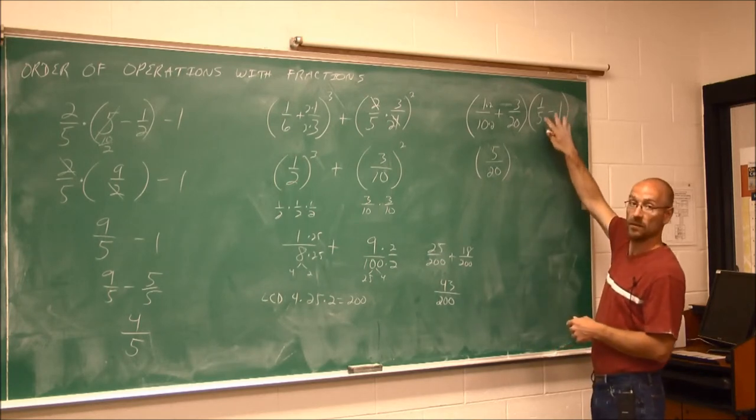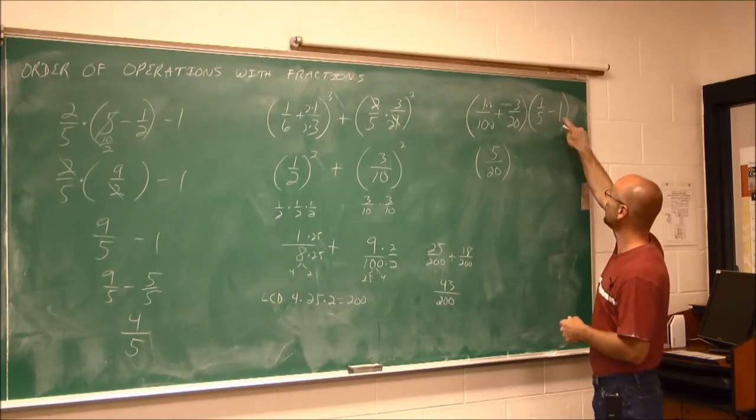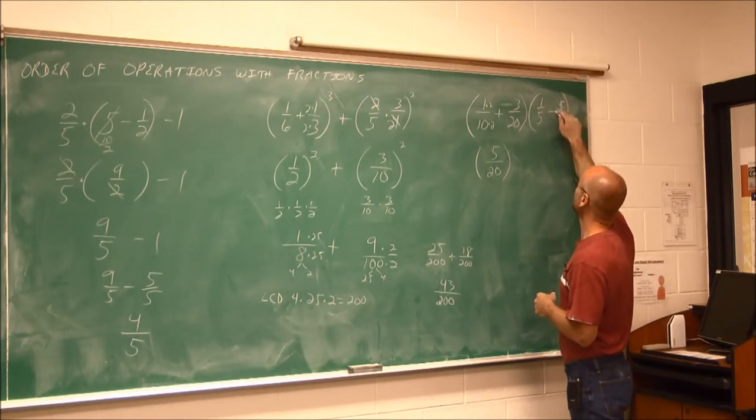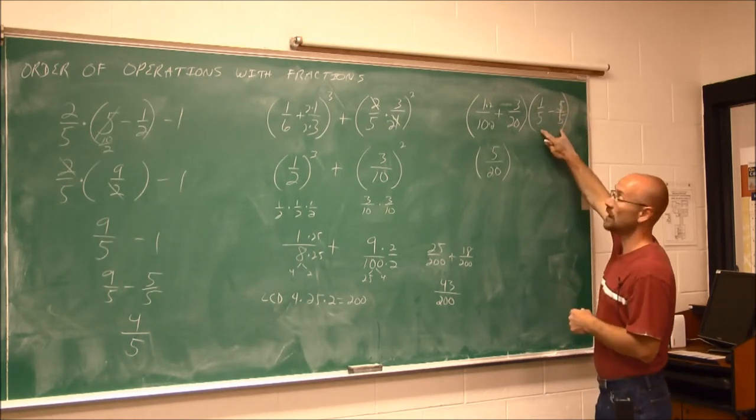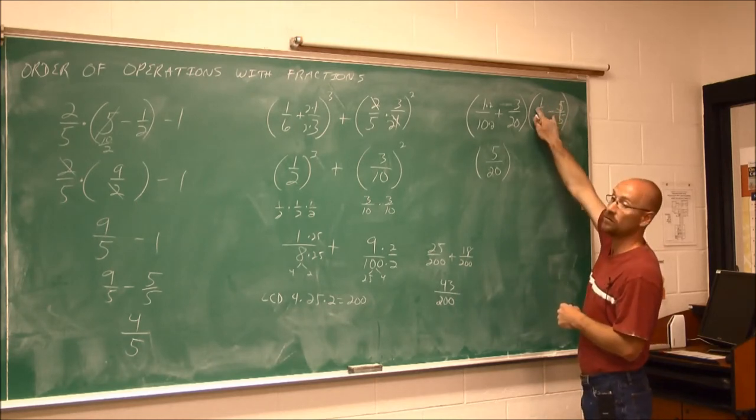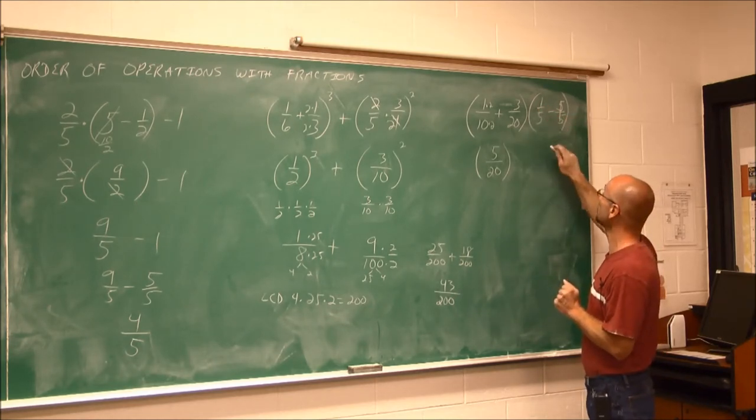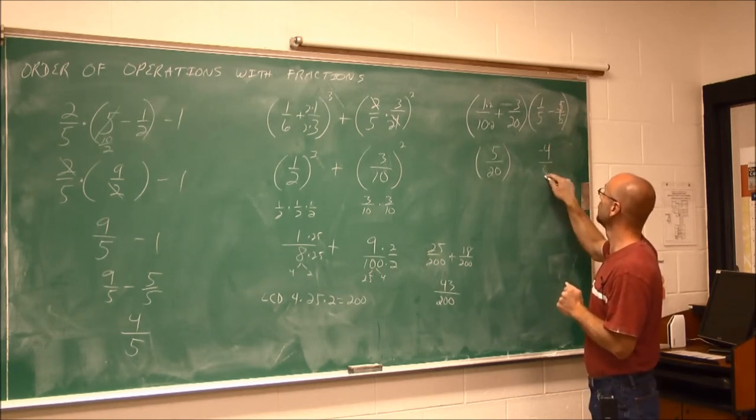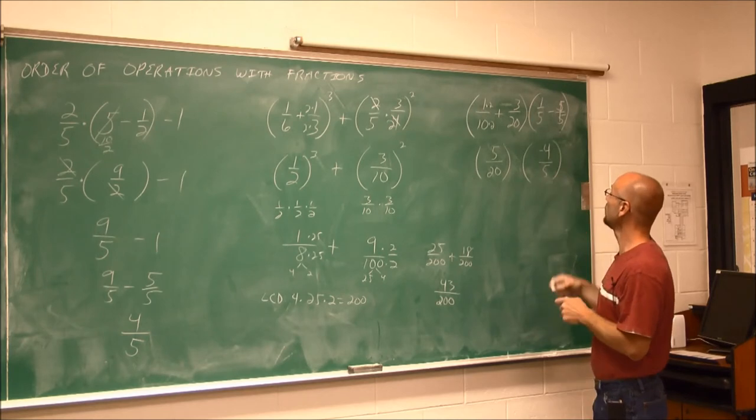In here, I can simplify within this grouping symbol. And there's that value of 1 that I can write as 5-fifths. Because I can write 1 to have any denominator. 1 minus 5. Well, they have different signs. I'm going to find their difference. Their difference is 4. But the larger value is negative. And now we've simplified that.